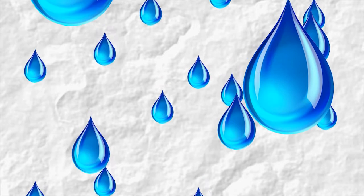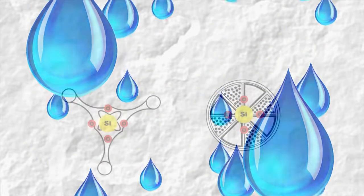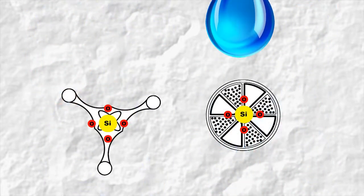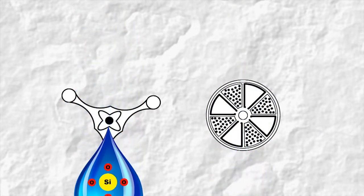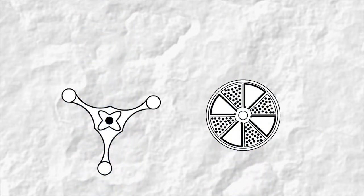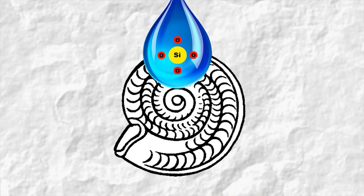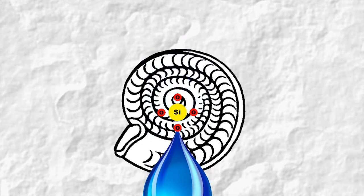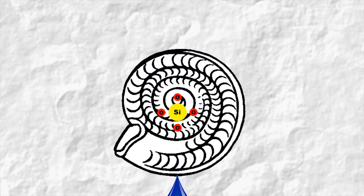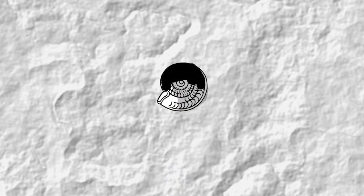Chalk is porous, which means that water can run through it. Rainwater charged with carbonic acid seeped through the chalk, dissolving the silica from these tiny creatures. As this mixture met a larger marine creature, the silica stuck to it, and over about 70 million years layers built up, producing a large piece of flint.